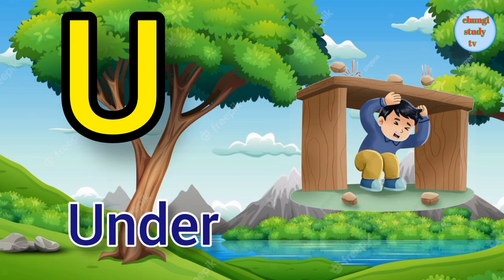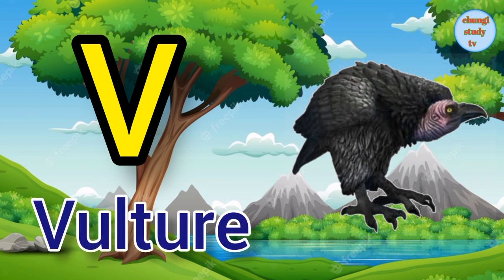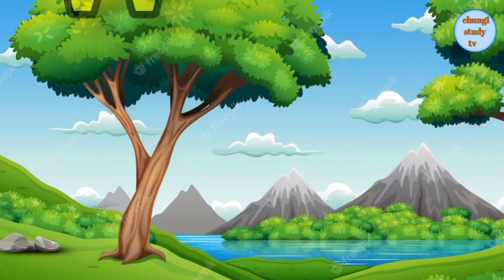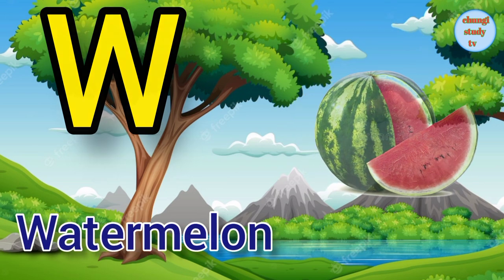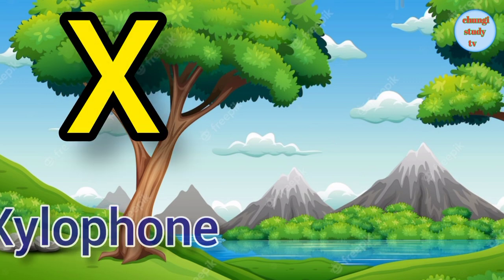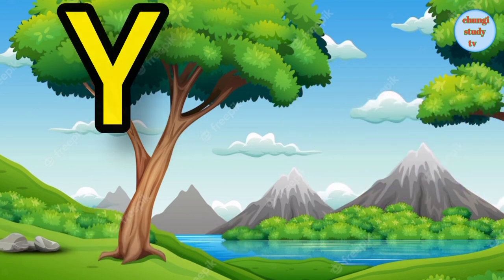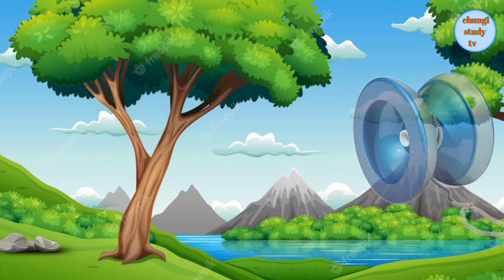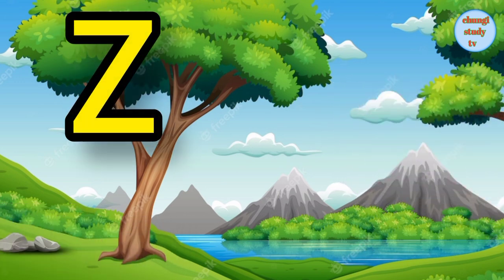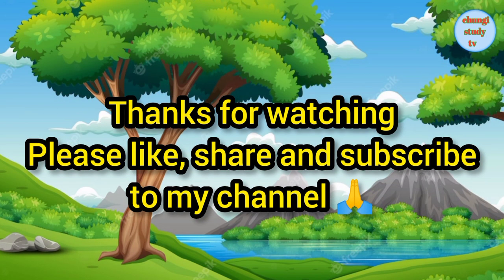U. U for under, under means neechi. V. V for vulture, vulture means gate. W. W for watermelon, watermelon means tarbuj. X. X for xylophone, xylophone means xylophone. Y. Y for yoyo, yoyo means yoyo. Z. Z for zebra, zebra means chithidhar ghoda.